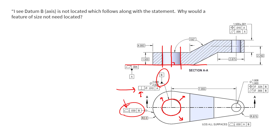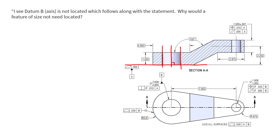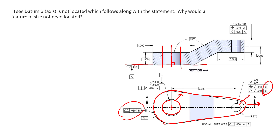So if this hole drifts, in order to pass the profile callout, this profile needs to drift with it. If the hole drifts up and to the left, this profile also needs to drift up and to the left to pass the surface profile callout. This hole, as a datum feature, is setting the origin — it's the locating feature for all other features. So if the hole drifts to the right, this profile also needs to drift to the right.